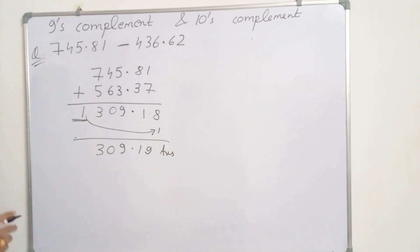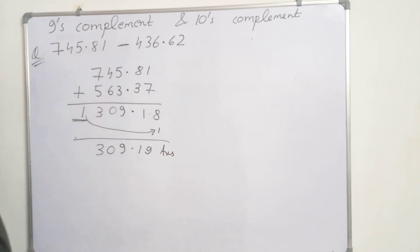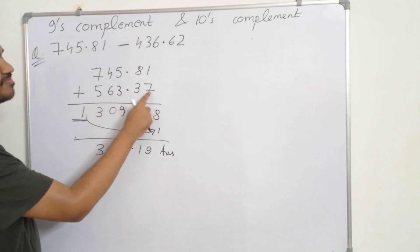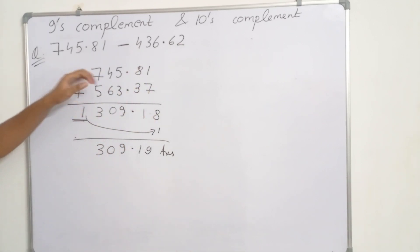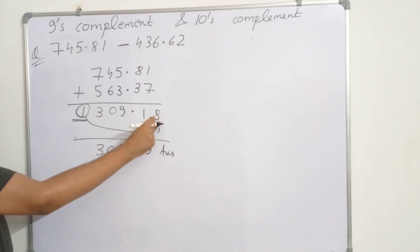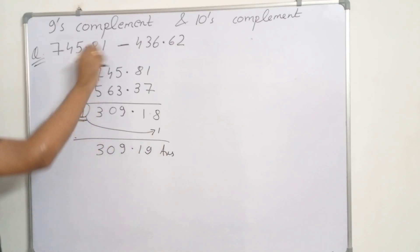To recap: we have to subtract 745.81 minus 436.62 using the 9's complement method. First take the 9's complement of the second number, which gives 563.37. Add these two numbers and we get 1309.18. There is a carry, which means the result is positive. Add the carry to the last digit, giving 309.19.